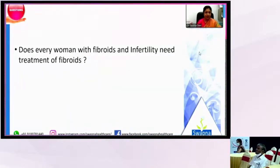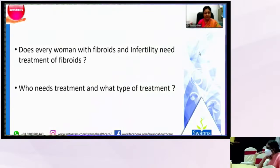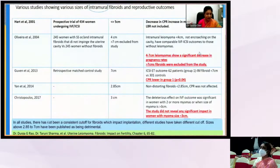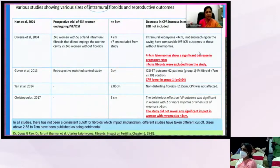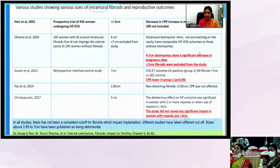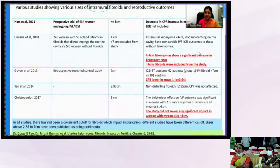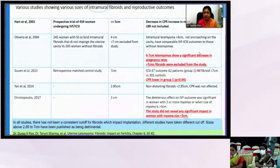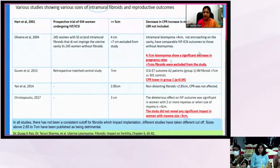We need to ask ourselves: does every woman with fibroids and infertility need to be treated and operated upon? Who needs treatment and what type? Looking at various studies of intramural fibroids and reproductive outcomes, fibroids less than 3 cm usually don't interfere with fertility, but 4–7 cm fibroids show a significant decrease in clinical pregnancy rates and need to be tackled.